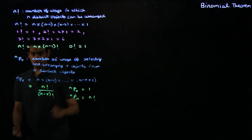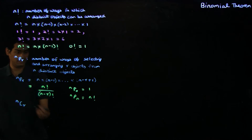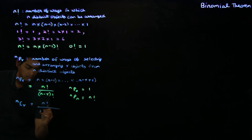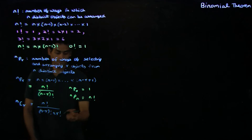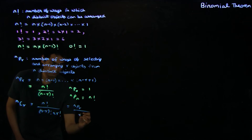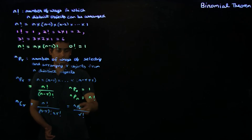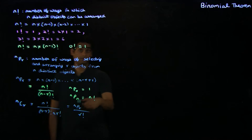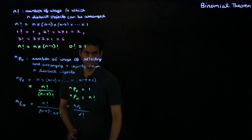A third related concept is the number of ways of choosing r objects from n distinct objects. This is denoted by nCr, and the definition of nCr is n factorial divided by n minus r factorial times r factorial. This is the same as nPr divided by r factorial. The interpretation is: it is the number of ways of selecting and arranging r objects from n distinct objects, which is nPr, divided by the r factorial possible ways of ordering those objects, giving you the number of ways of selecting r objects from n distinct objects.